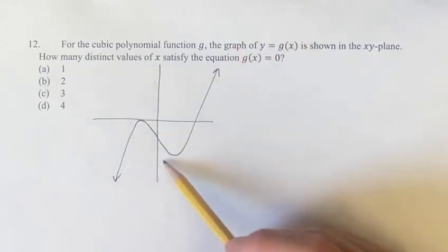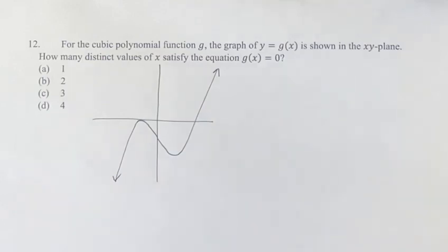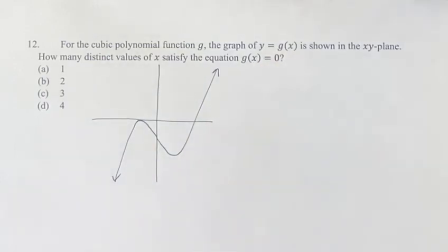And given its graph, y equals g of x, which is what's represented here, how many distinct values of x satisfy the equation g of x is equal to zero?